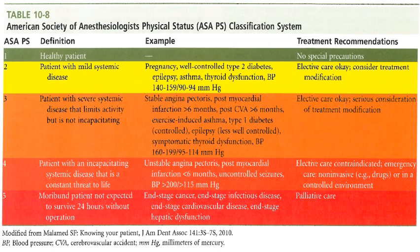ASA Class 3 includes patients with severe systemic disease that limits activity but is not incapacitating, such as stable angina pectoris, post-myocardial infarction 6 months after the attack, and post-cerebrovascular accident 6 months after the attack. Elective care is okay but serious treatment plan modifications should be considered. Class 4 includes patients with incapacitating systemic disease that is a constant threat to life, like unstable angina and post-myocardial infarction within the first 6 months. Here elective care is contraindicated; only emergency non-invasive care or care in a controlled hospital environment is given.